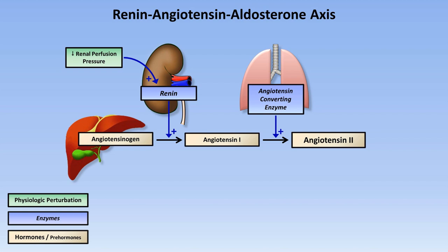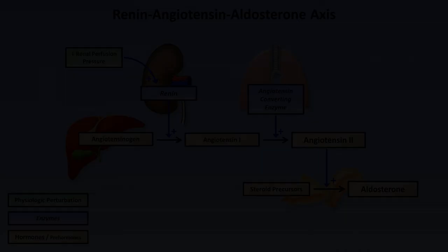Angiotensin-2 has many of its own actions, but one of them is in the adrenal glands, where it stimulates conversion of steroid precursors into another important hormone called aldosterone. So in summary, low blood pressure in the kidney results in secretion of renin, the ultimate result of which is increased levels of circulating angiotensin-2 and aldosterone.